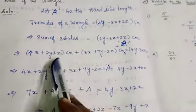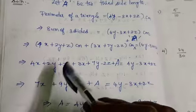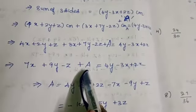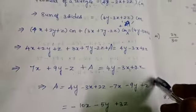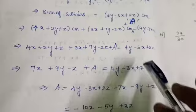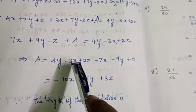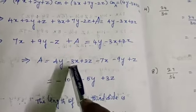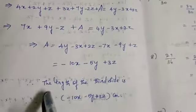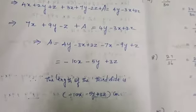Adding the two known sides: 4x plus 3x gives 7x; 2y plus 7y gives 9y; z minus 2z gives minus z. So: 7x plus 9y minus z plus A equals 4y minus 3x plus 2z. Solving for A: A equals 4y minus 3x plus 2z minus 7x minus 9y plus z. Combining like terms: minus 3 minus 7 gives minus 10x; 4y minus 9y gives minus 5y; 2z plus z gives 3z. So the third side A equals minus 10x minus 5y plus 3z centimeters.